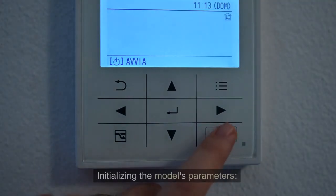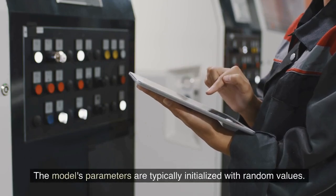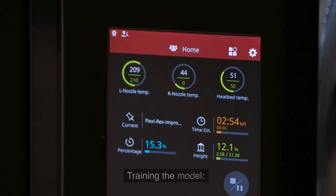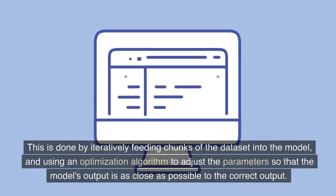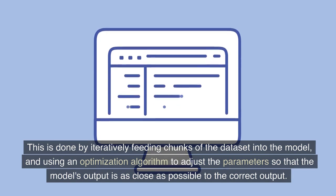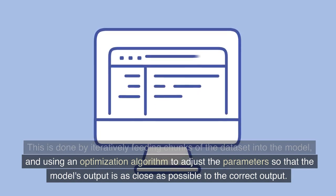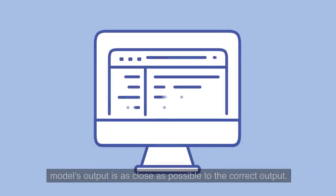Initializing the model's parameters. The model's parameters are typically initialized with random values. Training the model is done by iteratively feeding chunks of the dataset into the model and using an optimization algorithm to adjust the parameters so that the model's output is as close as possible to the correct output.